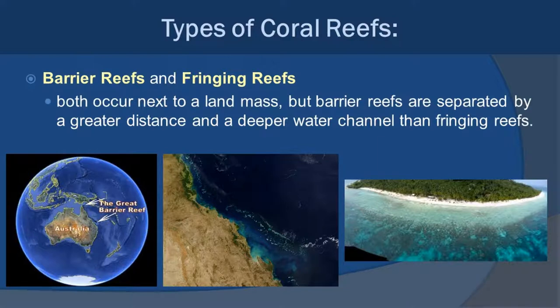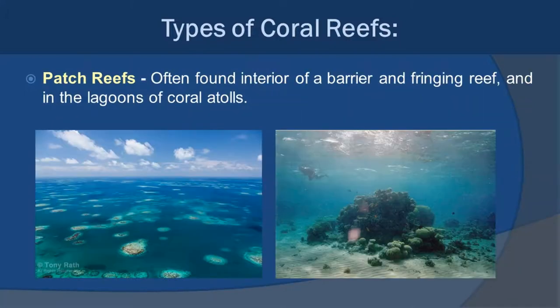Barrier and fringing reefs occur next to land masses. A barrier reef is generally separated from the land by a good distance — five to ten miles. A fringing reef exists right along the shoreline, very close to where the beach is. Patch reefs are small reefs found behind the barrier or fringing reef, between the reef and the land. You'll see them mixed in, and also in the lagoons within atolls.